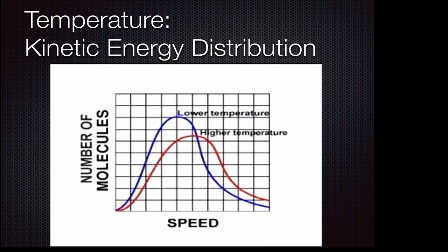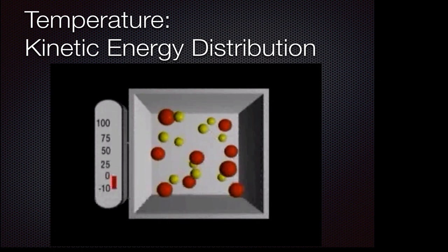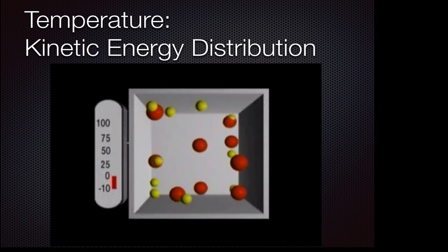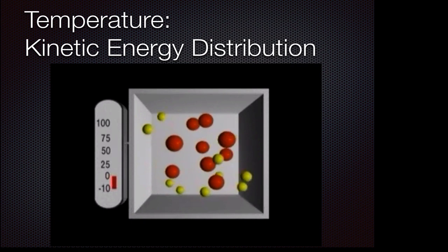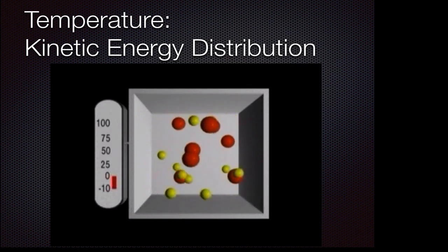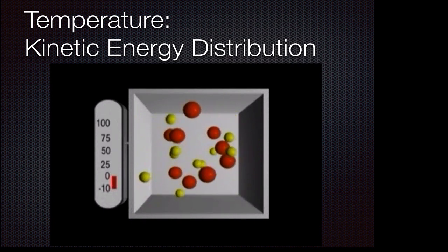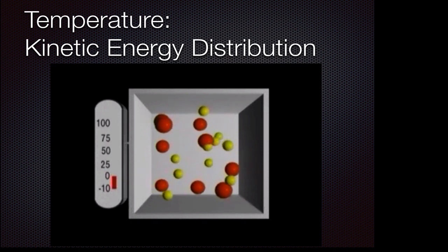This graph shows the distribution of molecular speeds for a particular gas at two different temperatures. Notice that the most probable molecular speed, given by the peak of the curve, increases as the temperature increases. Here we see a mixture of two gases with different molecular masses: helium and neon.